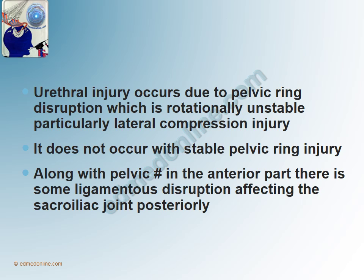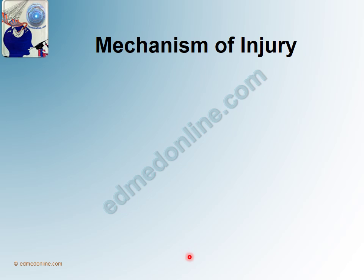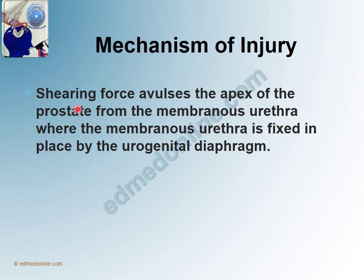Whenever a urethra is injured, various forces act on that segment in opposite and different directions. Because of the push and pull that occurs, the mechanism of injury — the shearing force — avulses the apex of the prostate from the membranous urethra, where the membranous urethra is fixed in place by the urogenital diaphragm. This is classically described as an apple being plucked from a tree — the apple being the prostate, plucked from its attachment at the membranous urethra to the urogenital diaphragm.